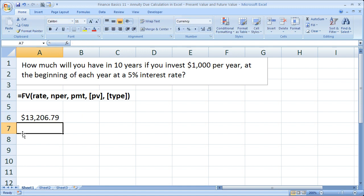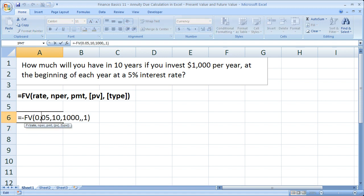So we see that the future value is $13,206.79. Now if it was not an annuity due, watch how that changes.